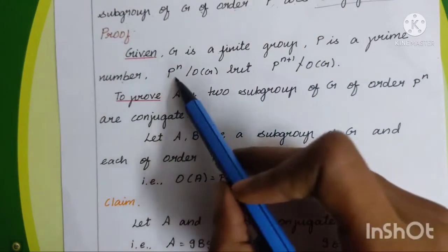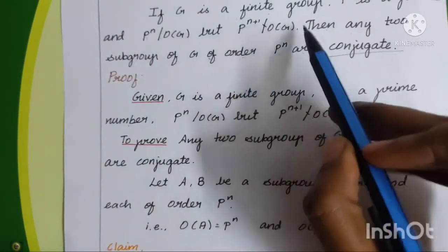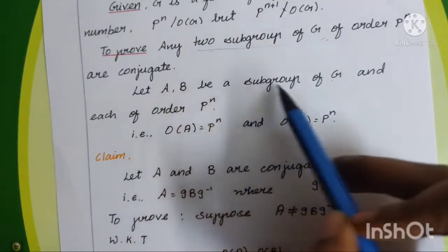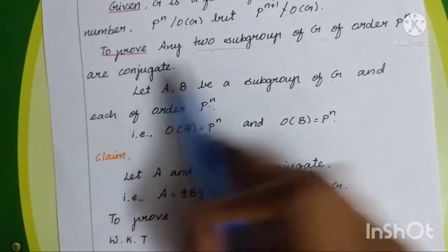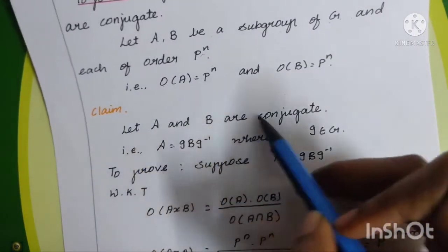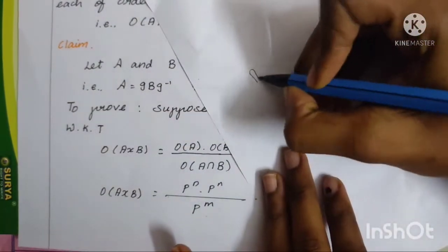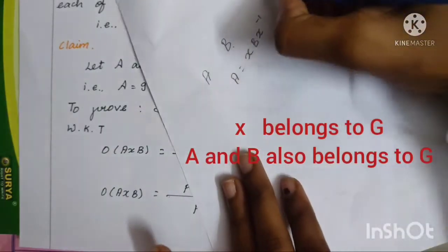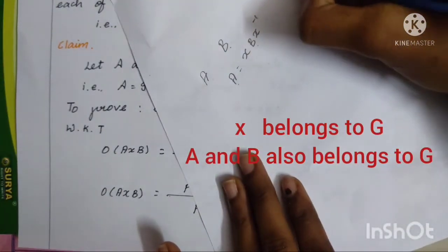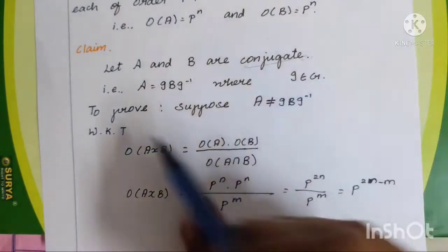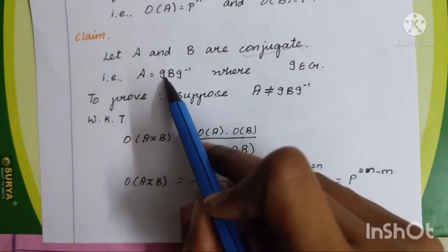G is a finite group, P is a prime number, P power n divides order of G, but P power n plus 1 does not divide order of G. To prove this, let A and B be subgroups of G, each of order P power n. The claim is that A and B are conjugate, meaning A is equal to x B x inverse for some x belonging to G.